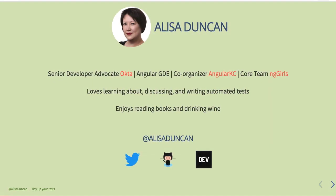I'm Elisa Duncan. I'm a senior developer advocate at Okta, an Angular GDE, co-organizer of Angular KC Meetup, and on the core team of ng-girls. I love learning about, discussing, and writing automated tests. I also enjoy reading books and drinking wine. You can follow me on Twitter, GitHub, and Dev.to at Elisa Duncan.